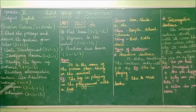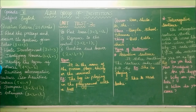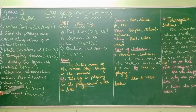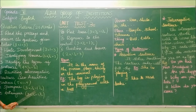The fifth section is rewriting interrogative sentences into assertive sentences. There will be 5 interrogative sentences, each carrying 1 mark, for a total of 5 marks. The sixth section is synonyms — there will be 3 synonyms, each carrying half a mark, for a total of 1 and a half marks.